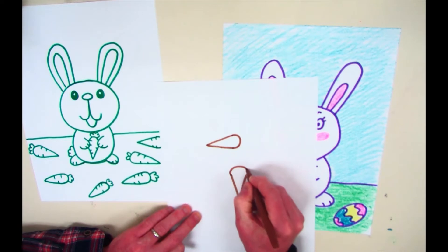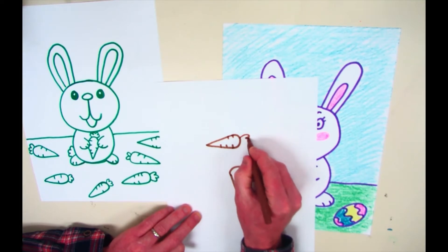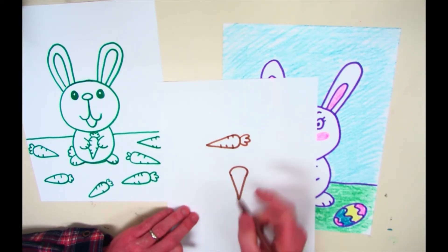And then you add a little curve on the end. And then you add in some lines and then a little stem. Easy stuff. Drawing carrots.